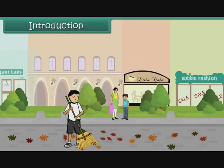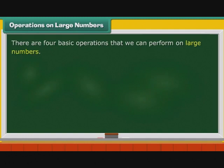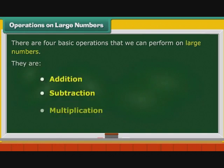In this lesson, you will learn to perform basic operations on large numbers. There are four basic operations that we can perform on large numbers. They are Addition, Subtraction, Multiplication, and Division. Let us look at them one by one in detail.